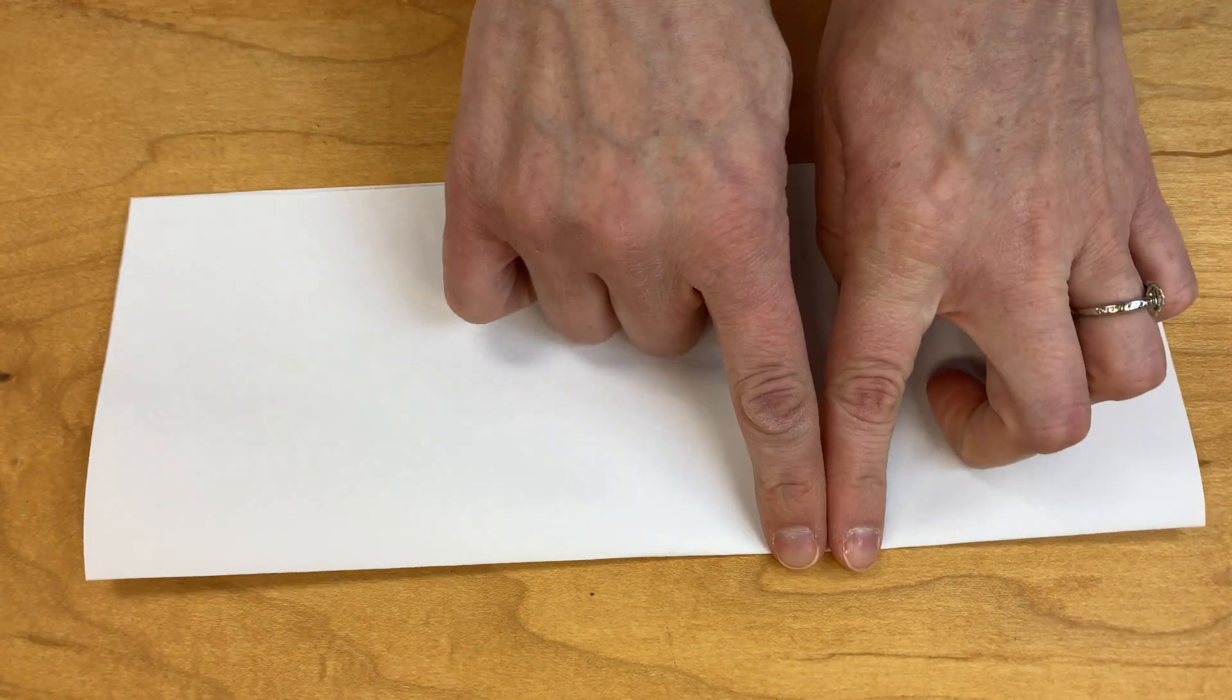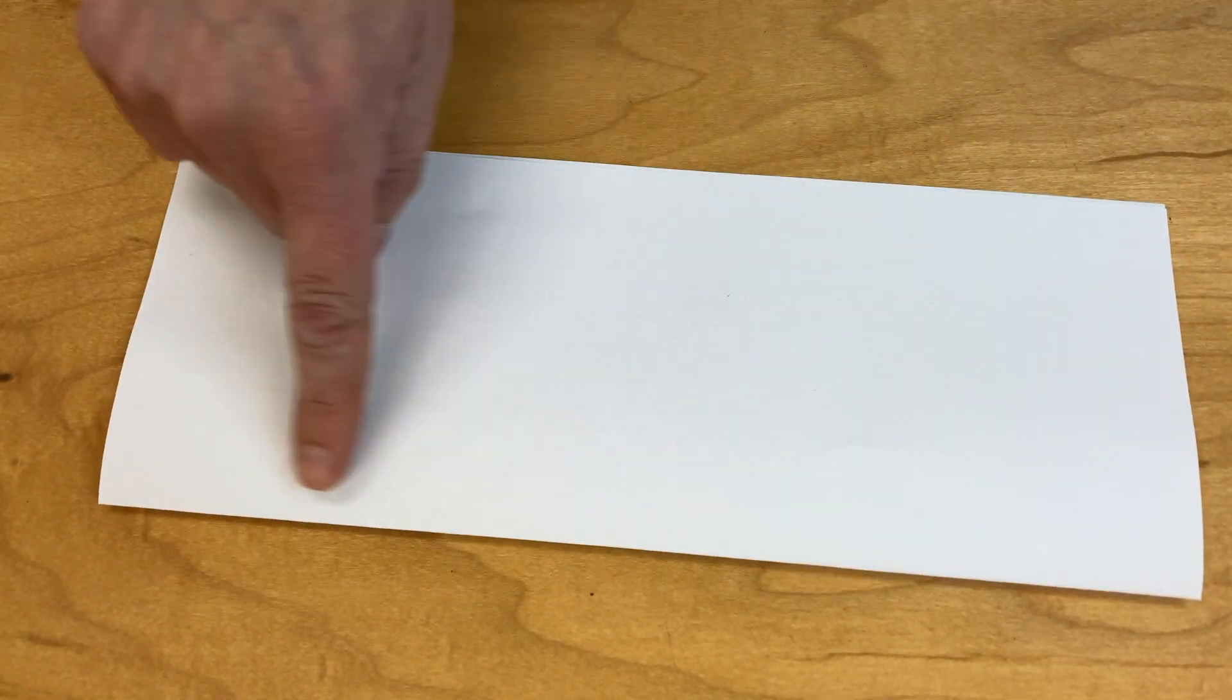Then you're going to go ahead and you can leave it connected here or you can cut it. This will make your paper people. I'm going to leave mine connected because in that way I'll have two sets of paper people when my project is finished.